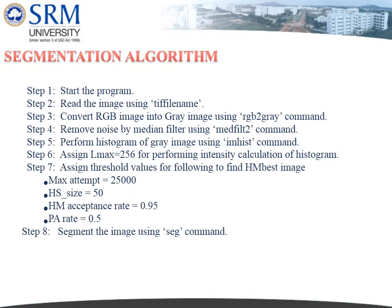The segmentation algorithm begins by reading the image using the imread command, converting the RGB image to grayscale, and removing noise using a median filter with medfilt2. A histogram of the gray image is performed using imhist, with lmax set to 256 for intensity calculation. Threshold values are assigned: maximum attempts equal to 25000, HSS size equal to 50, HM acceptance rate equal to 0.95, and PA rate equal to 0.5. The image is then segmented using the seccup function.